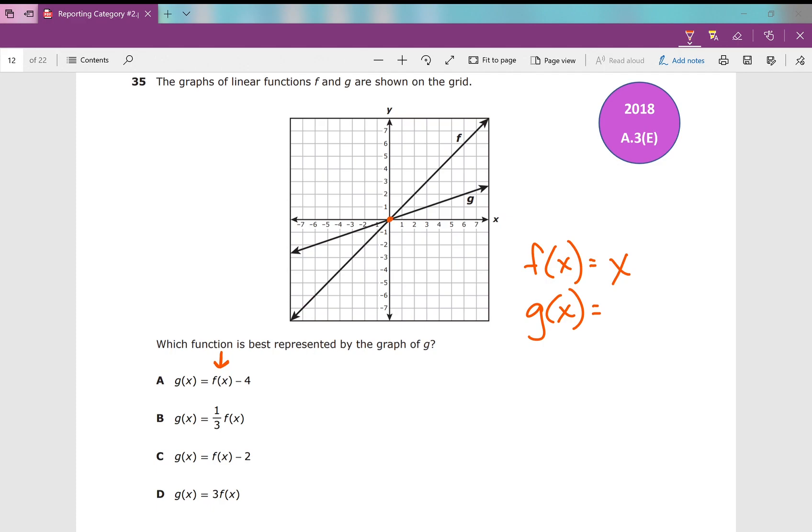So how do I write g of x in terms of f of x? What was the difference? It's one-third the slope, which means your answer is B. g of x is one-third the slope of f of x. And remember, if f of x equals x, then anywhere I see f of x, what can I replace it with? x. So g of x equals one-third times f of x, it's the same thing as g of x equals one-third times x. This is a really difficult problem for a lot of Algebra 1 students.